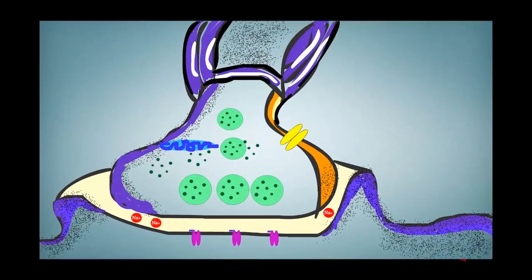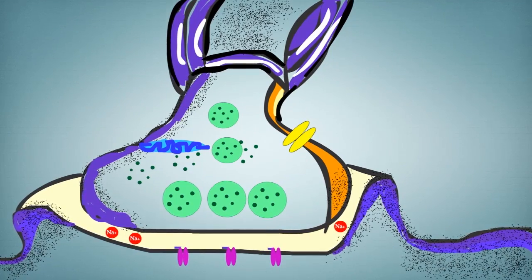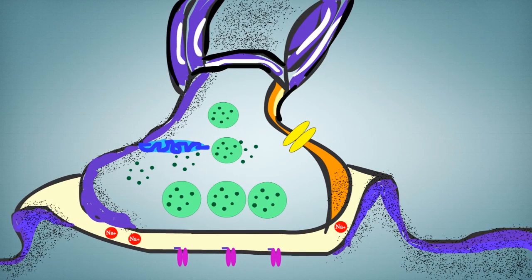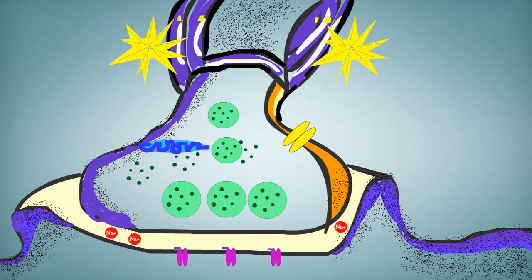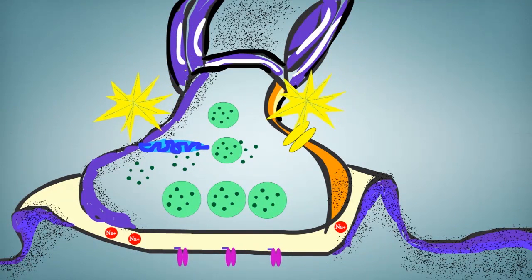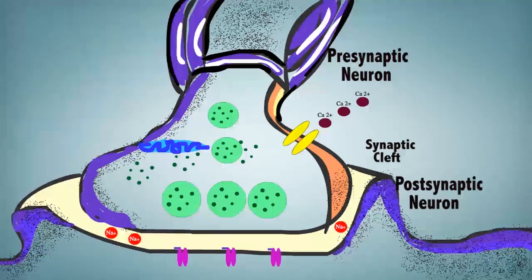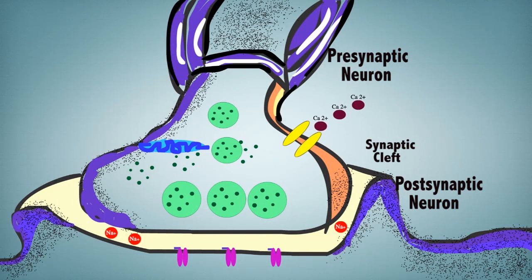The process begins with the action potential traveling to the end of the axon branch on the presynaptic neuron. The depolarization causes the voltage-gated calcium channels to open. Calcium diffuses into the presynaptic neuron because of the concentration gradient.